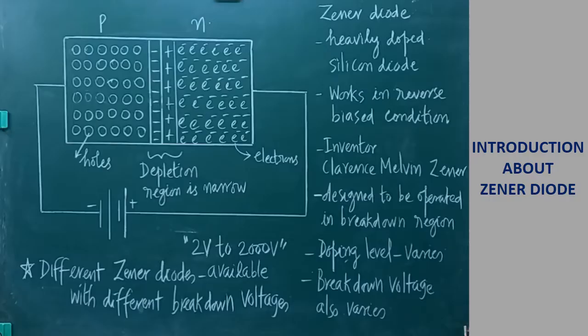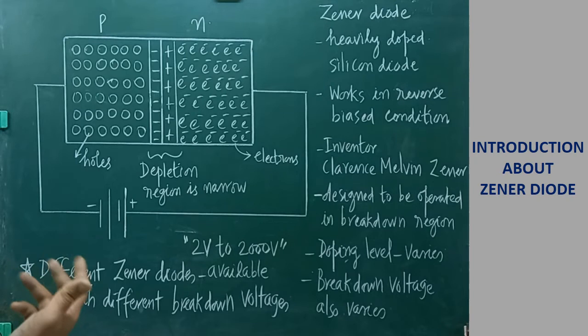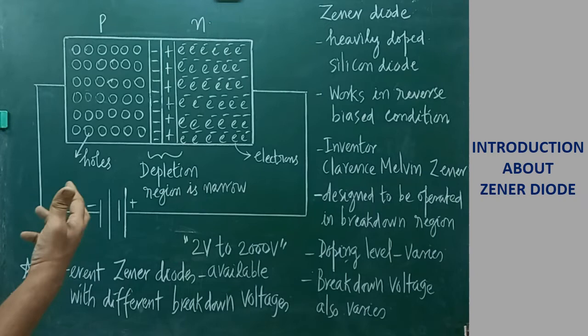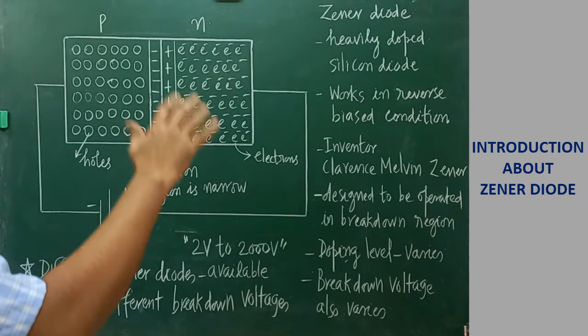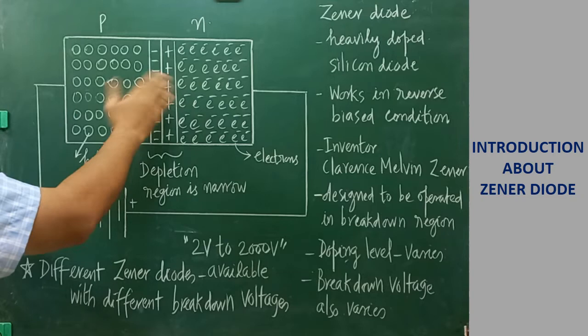Here we are going to learn what is Zener diode — the actual definition and how it is different from a P-N junction diode. First you have to understand that it is a heavily doped silicon diode. Heavily doped means on either side — P type semiconductor and N type semiconductor — both are heavily doped.